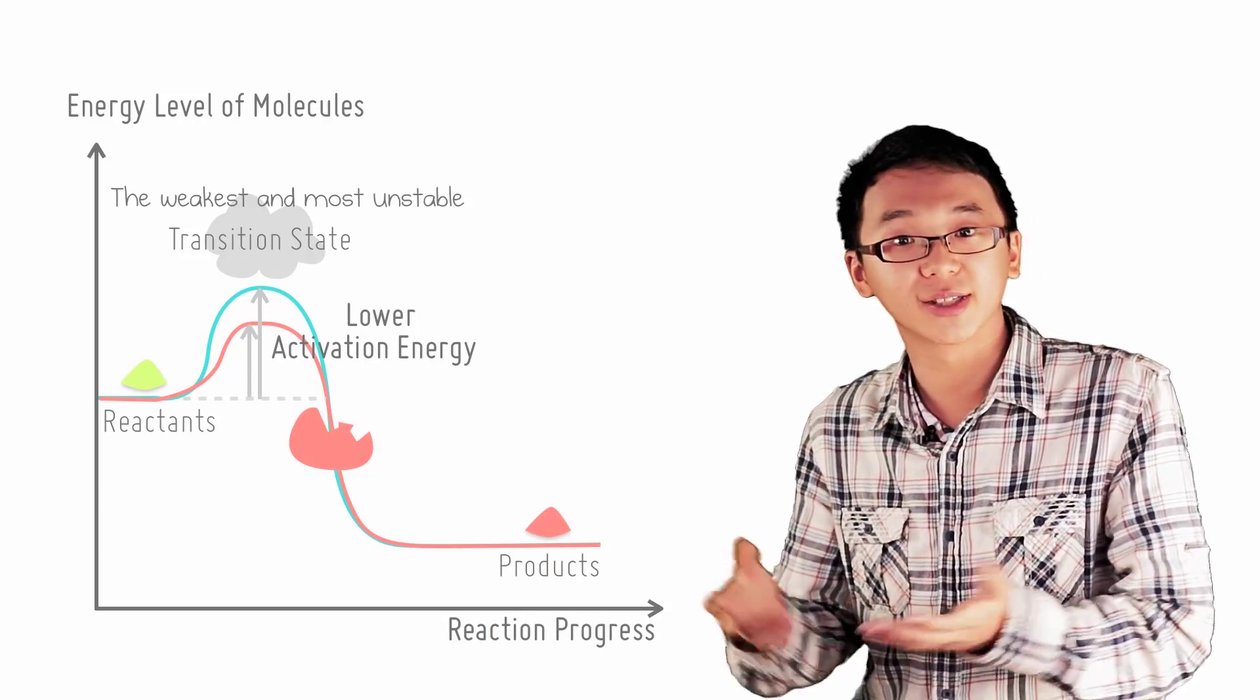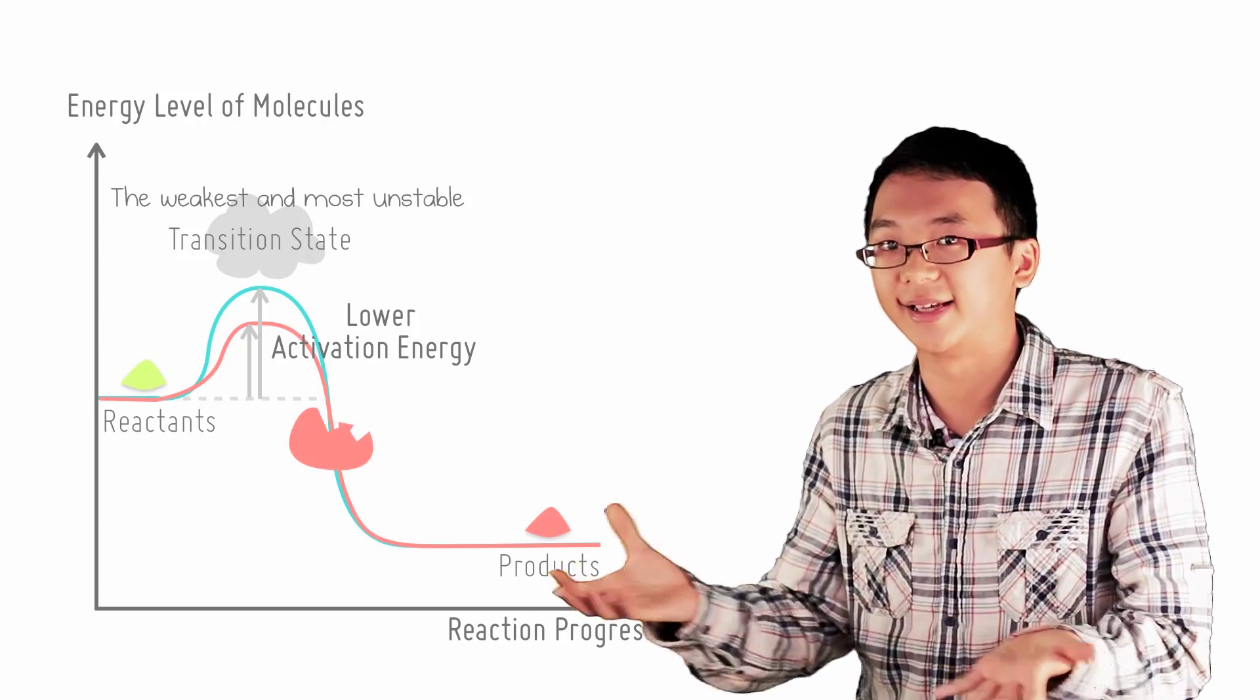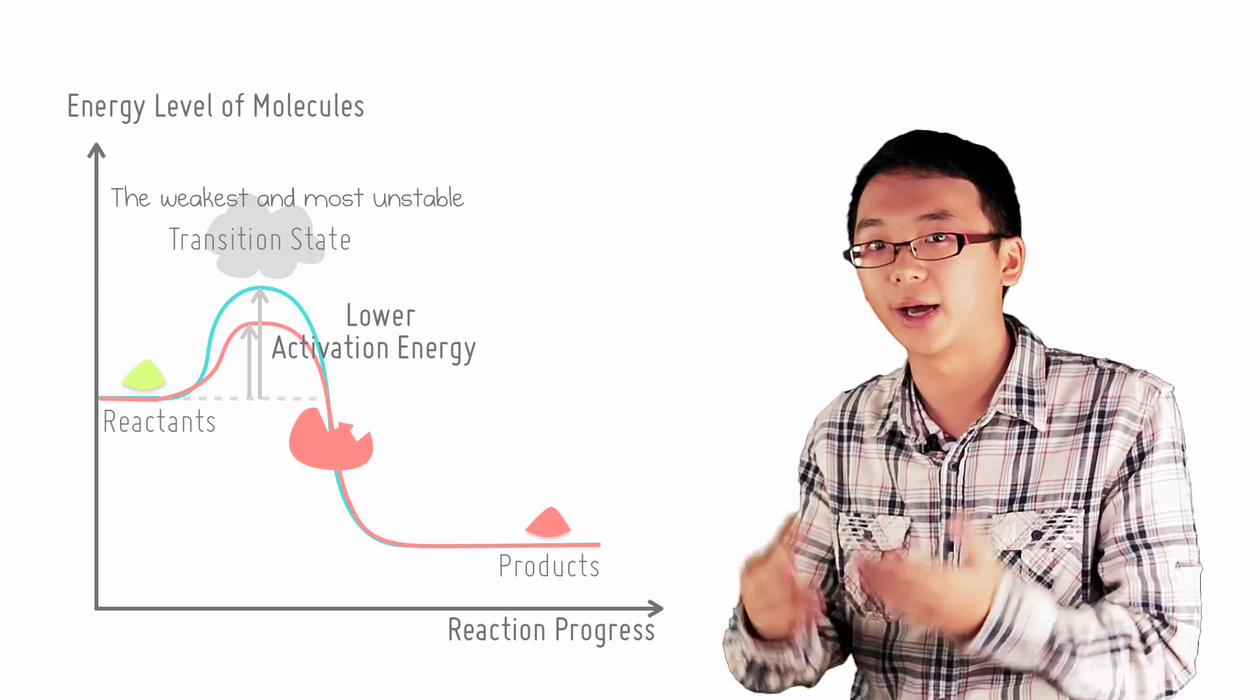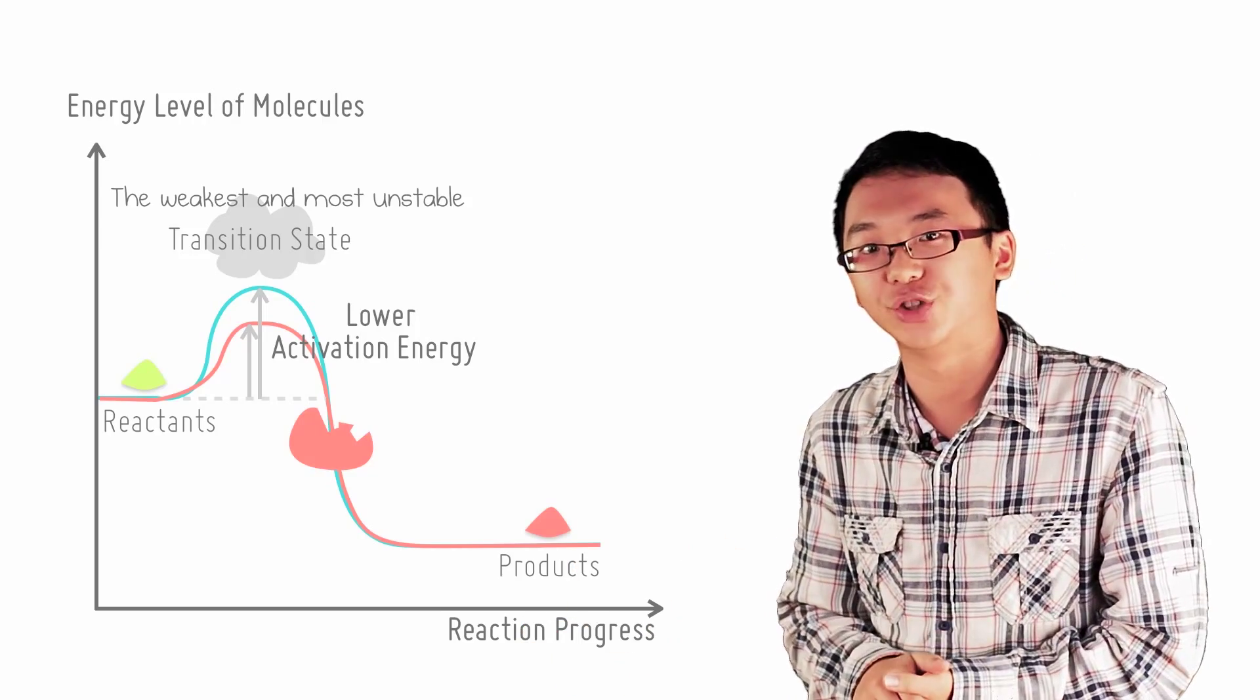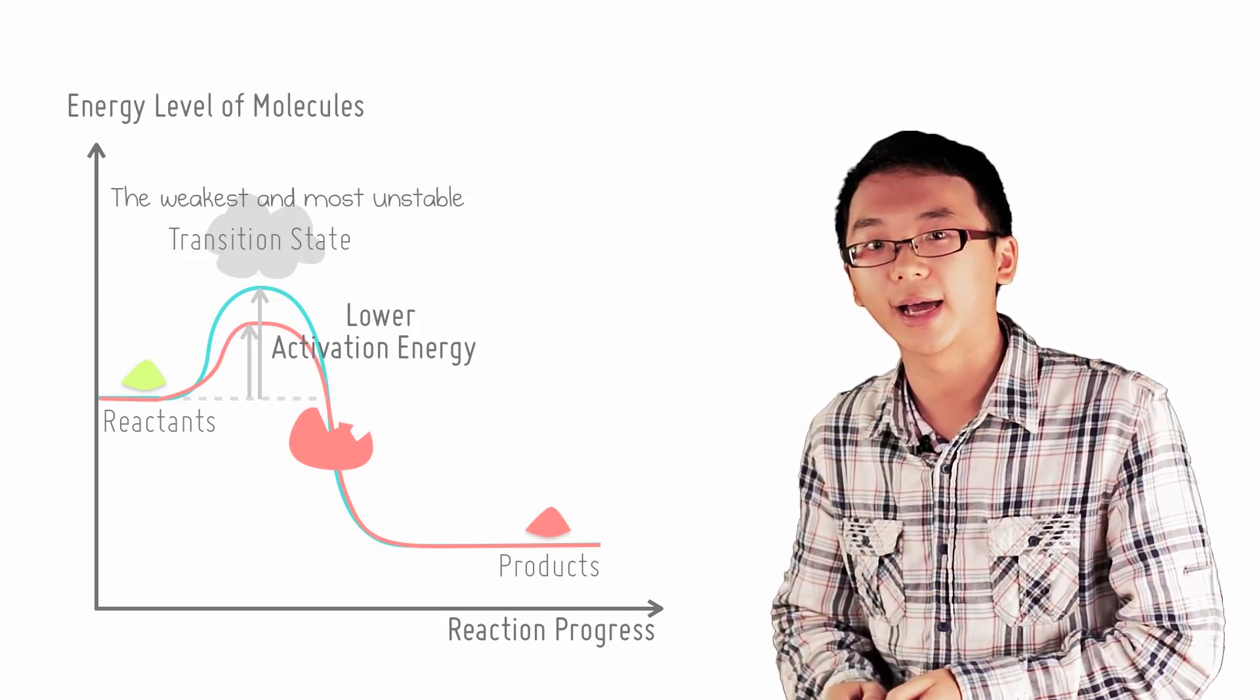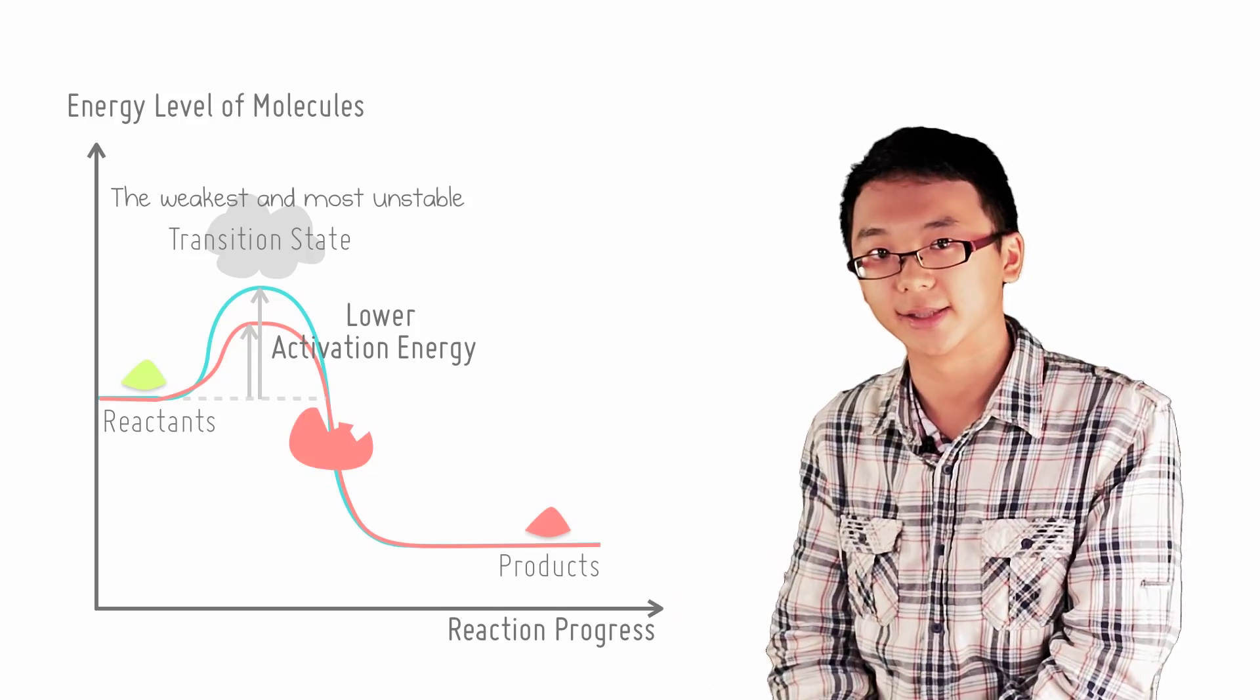So the path with a smaller activation energy or smaller mountain is going to cost less energy and will hence be favored by you, your enzyme, and your cow. Therefore, by providing an alternative energy pathway, enzymes increase the likelihood of the occurrence of a reaction and act as a catalyst.